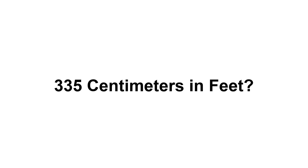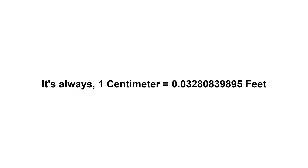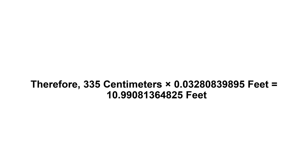335 centimeters in feet. First of all, we need to know the value of one centimeter in feet — one centimeter equals 0.03280839895 feet. Now we have to multiply 0.03280839895 by 335. Therefore, 335 centimeters times 0.03280839895 feet equals 10.99081364825 feet.